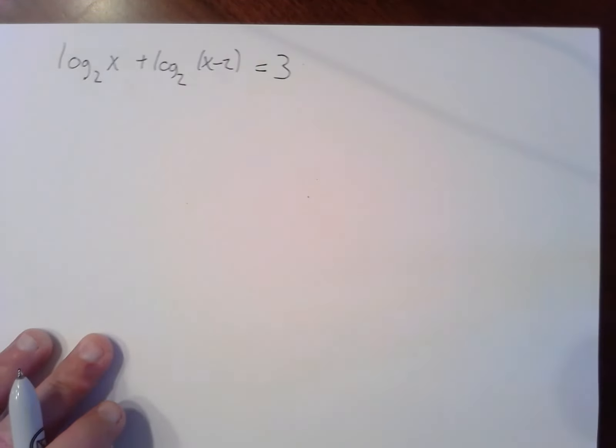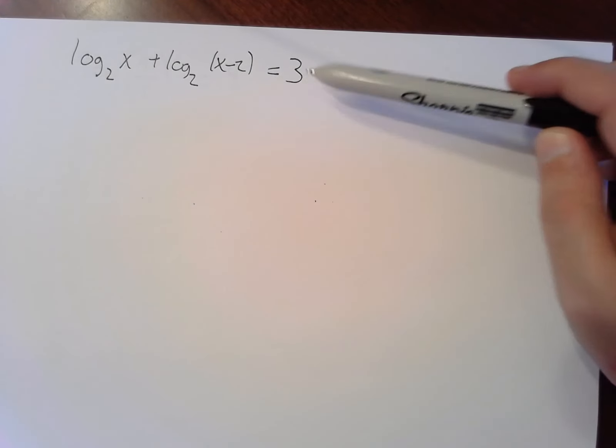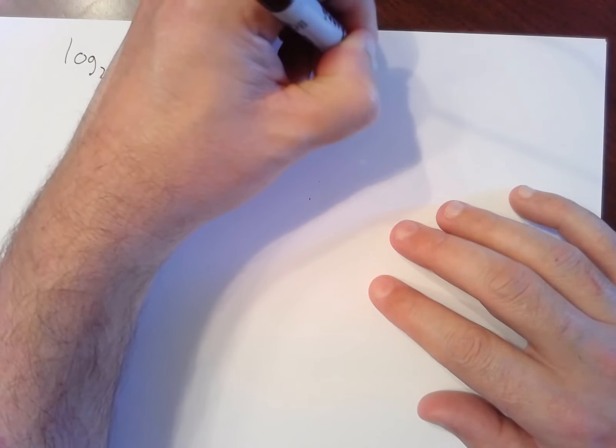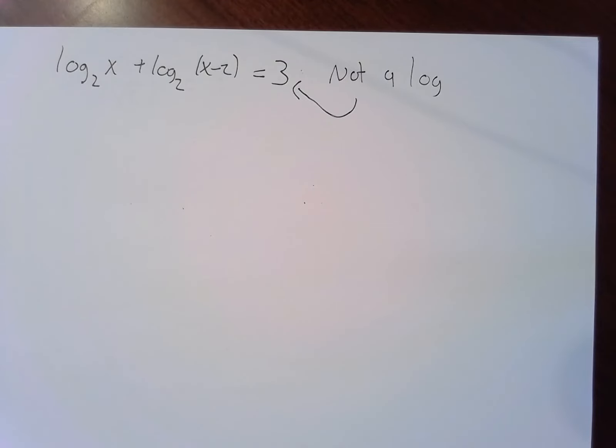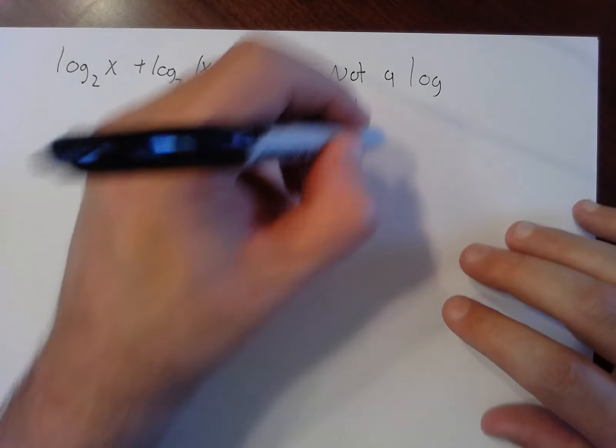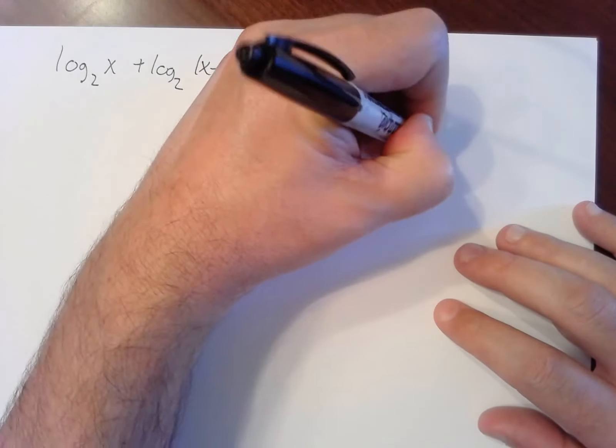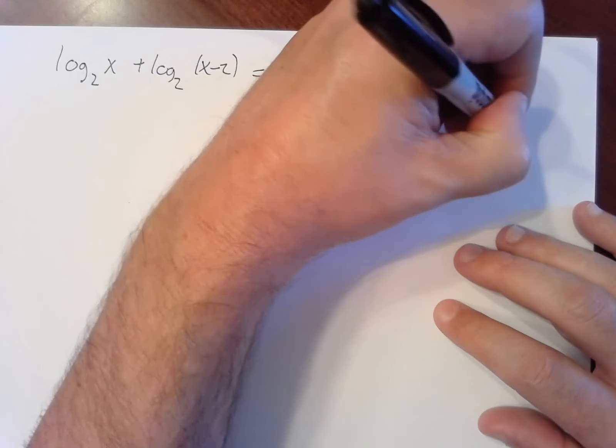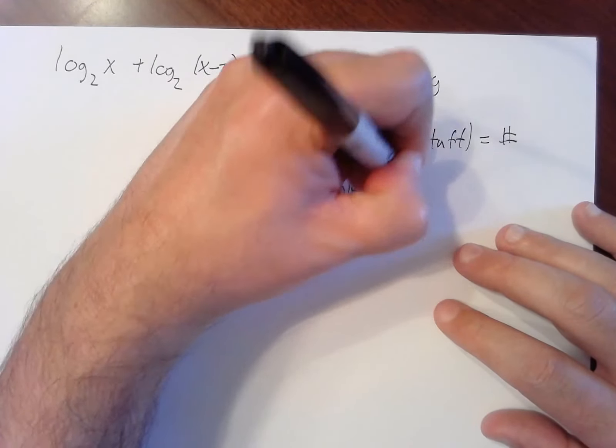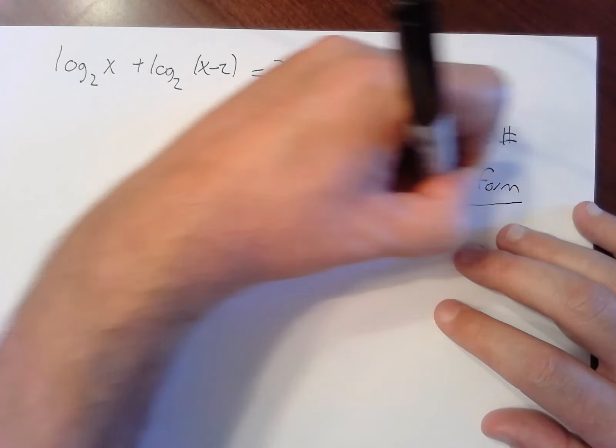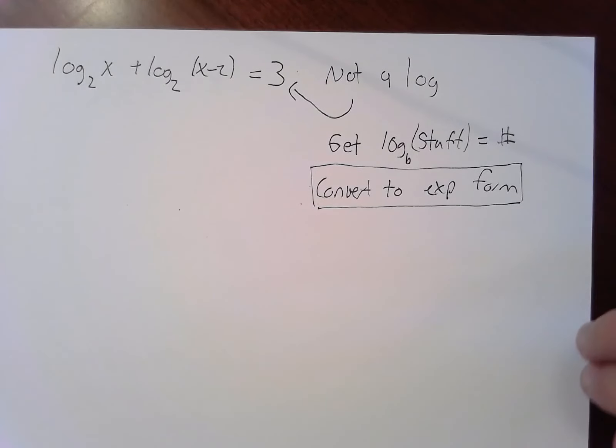Okay, now it's not always possible or easy to have everybody as a log. This is a different kind of equation now. That guy's not a log. If you have anybody in your equation, one single term that is not a log, your goal here is to get the equation in the form log base b of stuff equals a number, and then convert to exponential form. That's our goal.